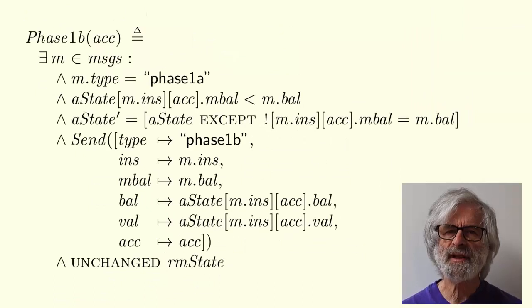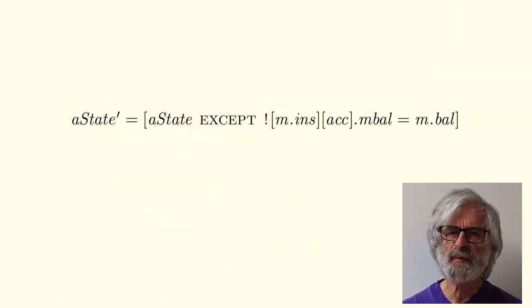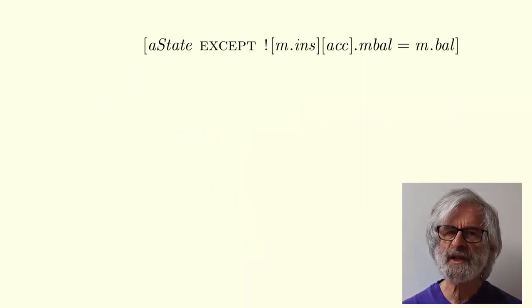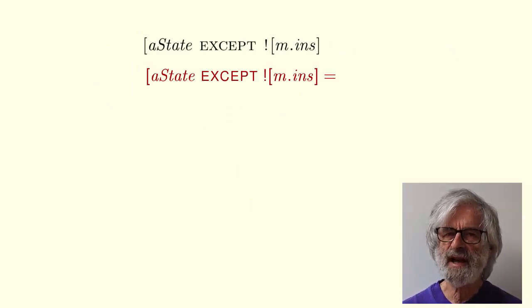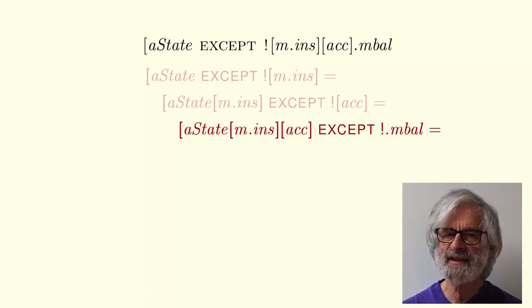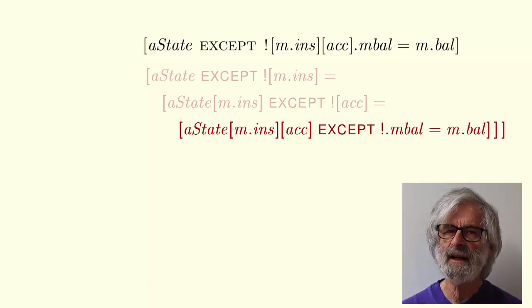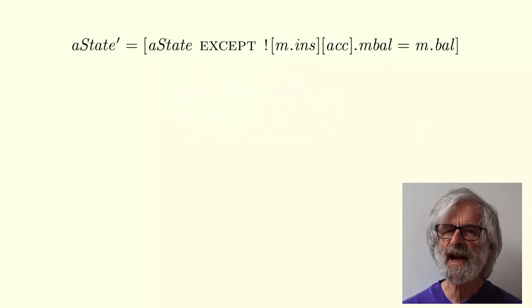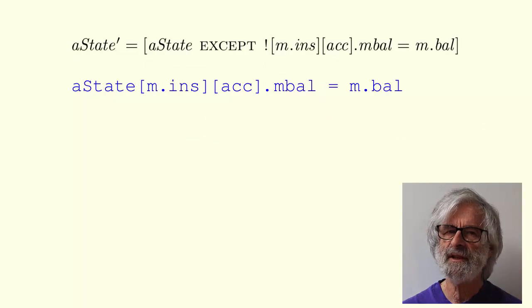The next new construct is in this definition. In this subformula, you haven't seen this form of accept expression. It's an abbreviation for a state except its value on m dot ins equals a state of m dot ins except its value on acc equals a state of m dot ins of acc except its m bal component equals m dot bal. If you stop and decipher this, you'll see that this formula corresponds to this programming language statement. So, you just have to remember this idiom and not try to figure out the accept expression. That's what I do.